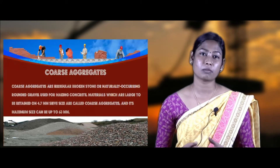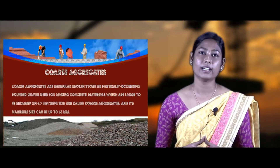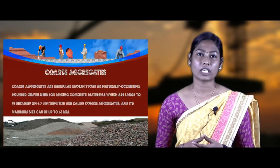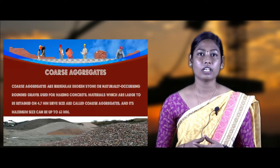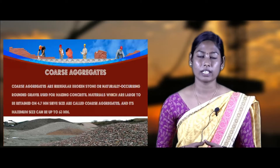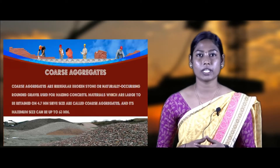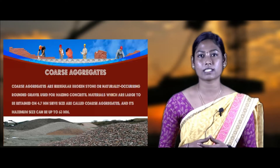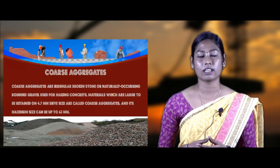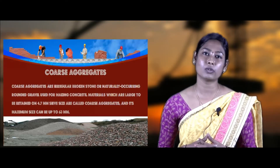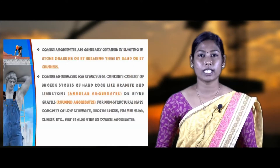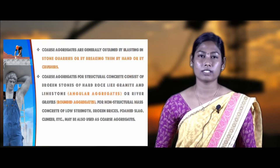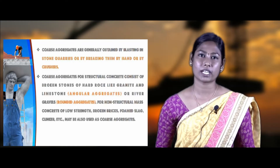Coarse aggregate is nothing but irregular broken stone or naturally occurring sand gravel which is used for making concrete. The materials which are large enough to be retained on 4.75 mm sieve sizes are called coarse aggregates, and the maximum sizes can be used up to 63 mm. Coarse aggregate is generally obtained by blasting of stone quarries or breaking them by hands or by crusher machines.